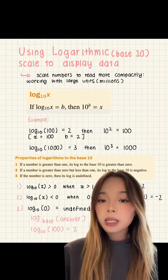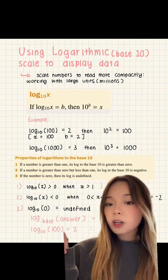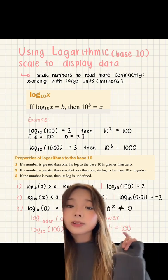The third property is that if the number is 0, then its log is undefined. For example, log 10 of 0 is undefined as 10 to the power of something can never equal 0.